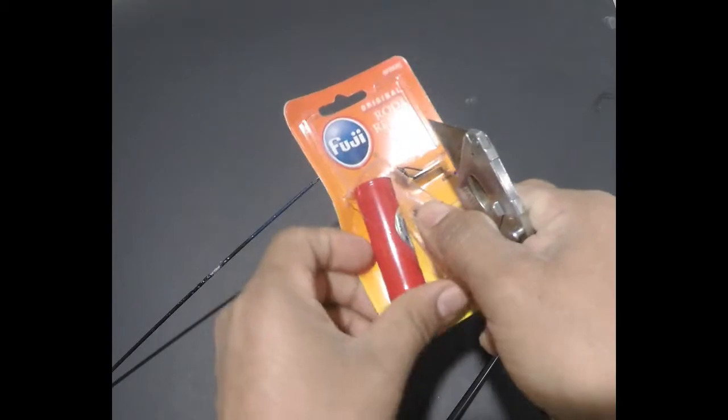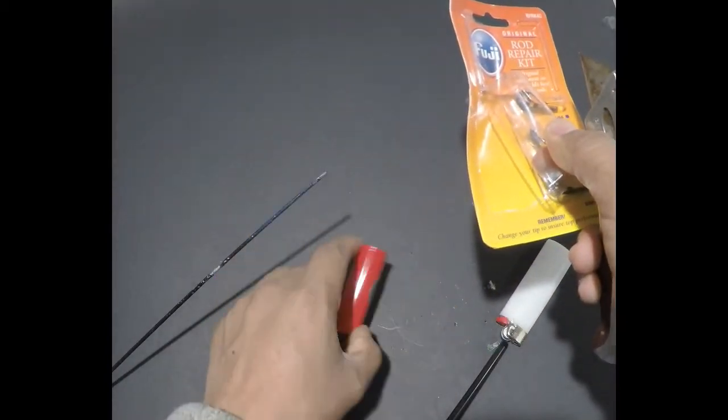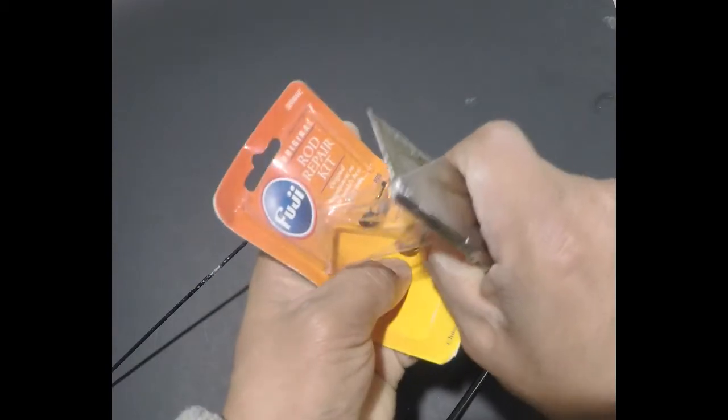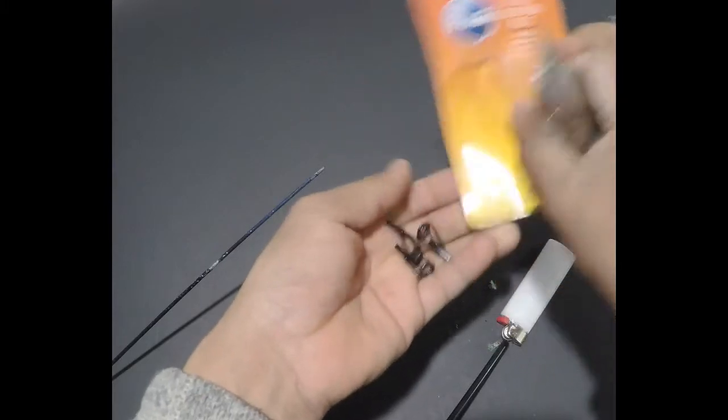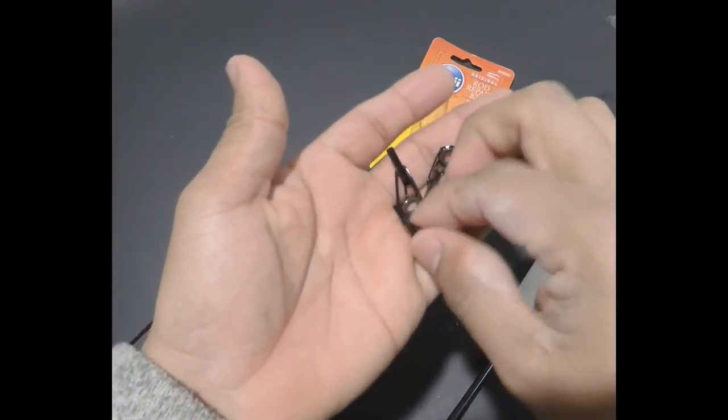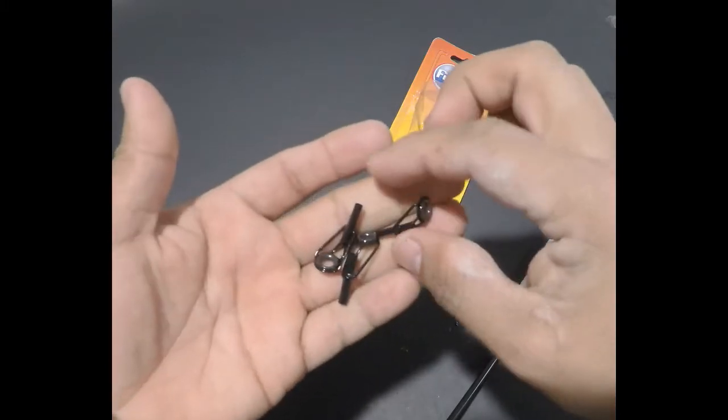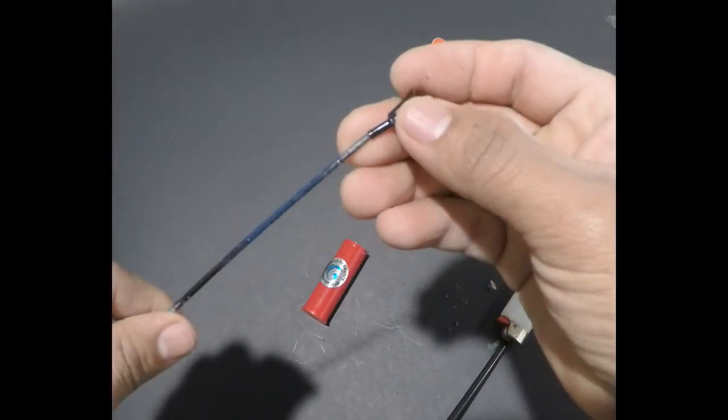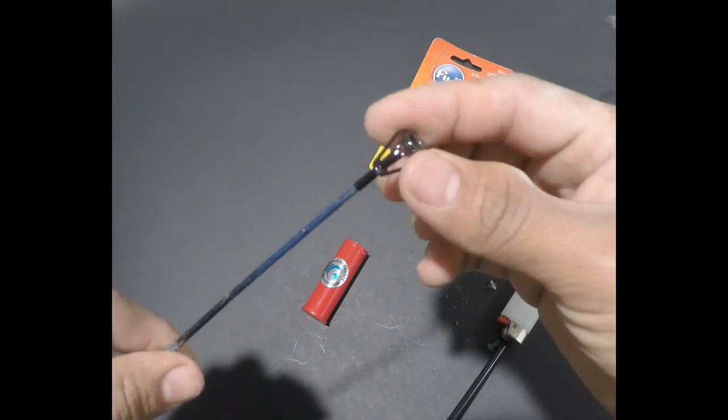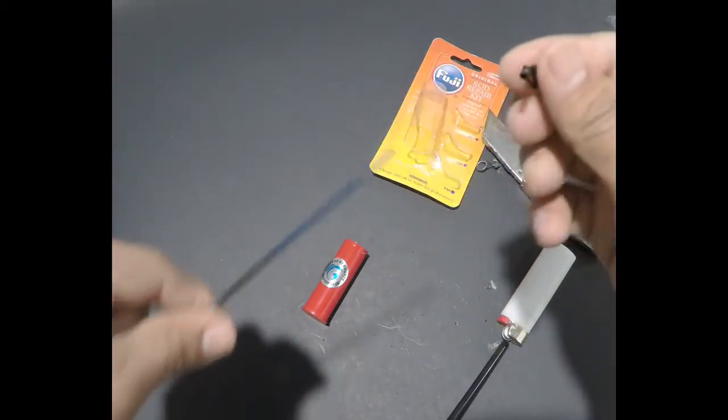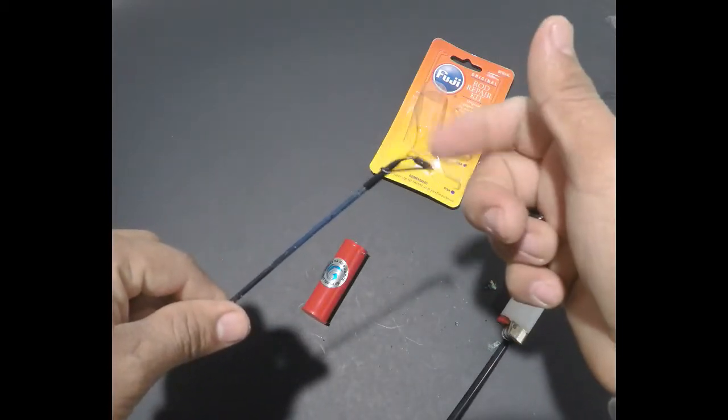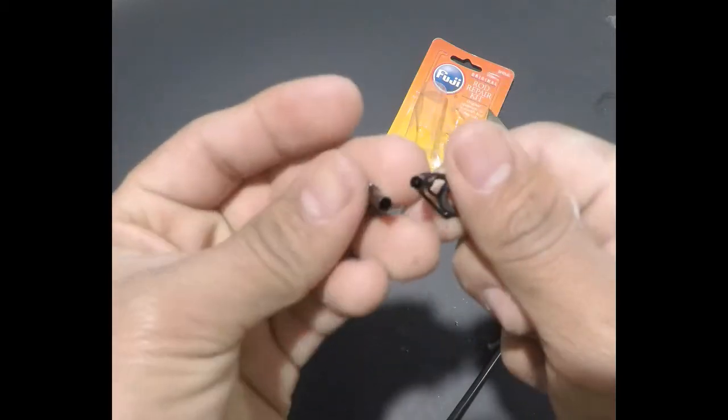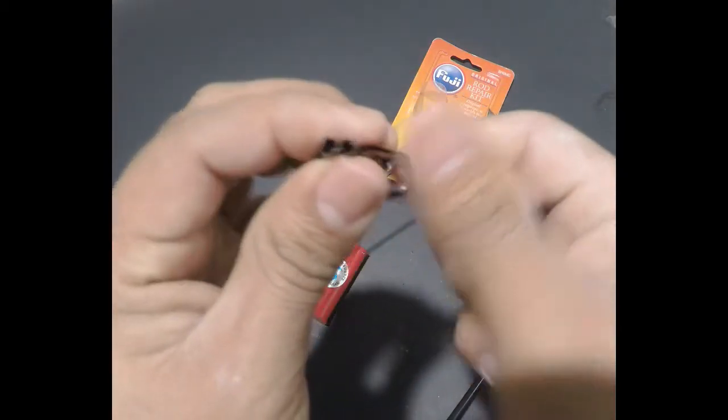We are going to take it out. We are going to remove the tips. We are going to test each one of the tips to see which one is going to fit. This is the one that is going to fit because these are already too big. They have a bigger hole. Look at the difference of the three.